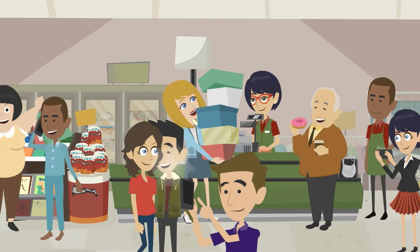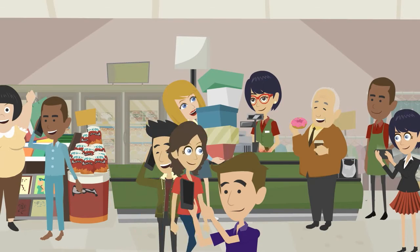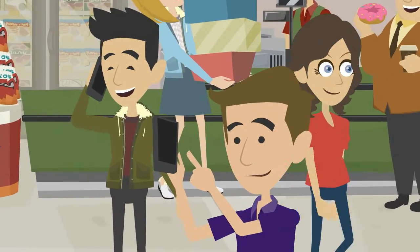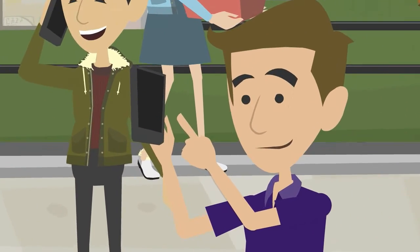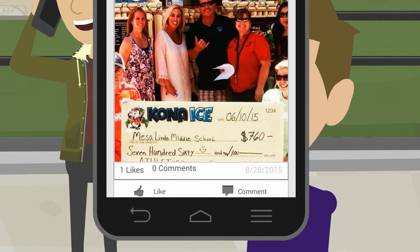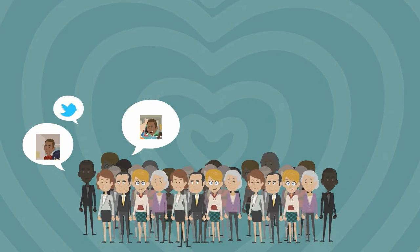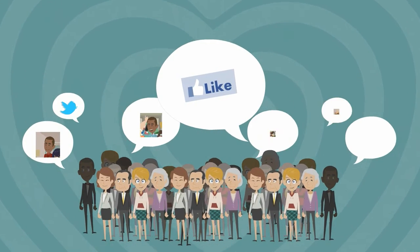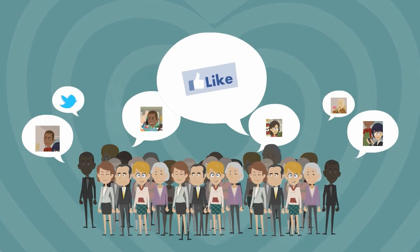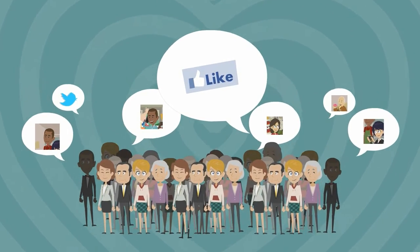When members attend Bob's event, they can comment on and like each other's posts in the Members Only community feed, and spread the word to their friends — reaching twice the audience that Bob could reach on his own.